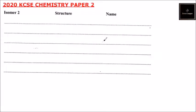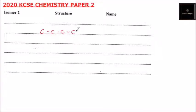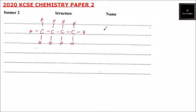The second isomer is 2-methylbutane. Its structure has four carbons in the main chain with a methyl branch, and hydrogen atoms covering the remaining bonds of each carbon.